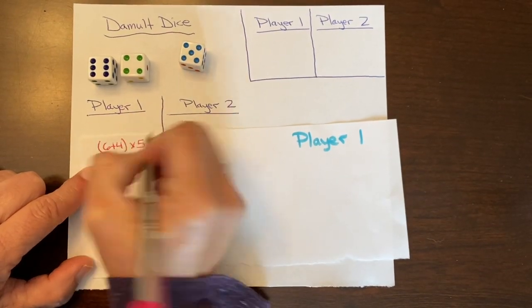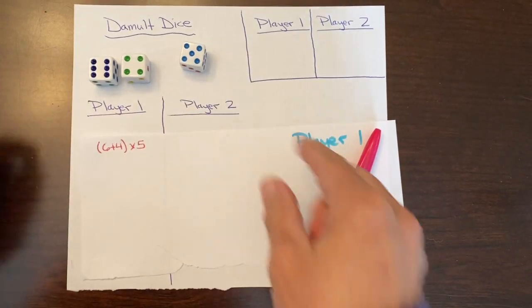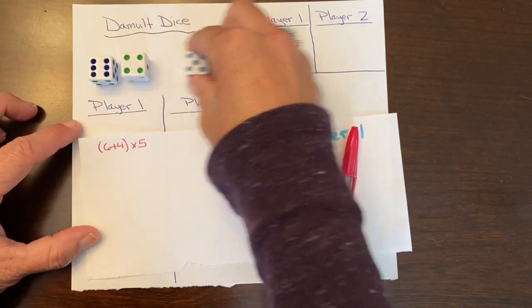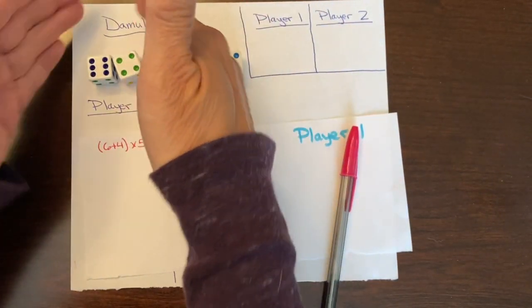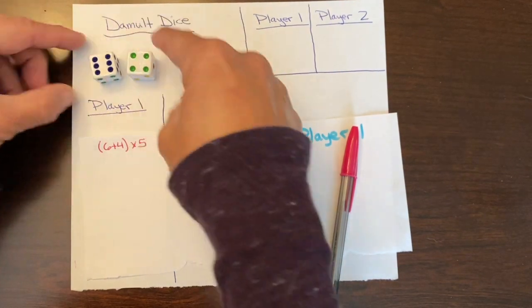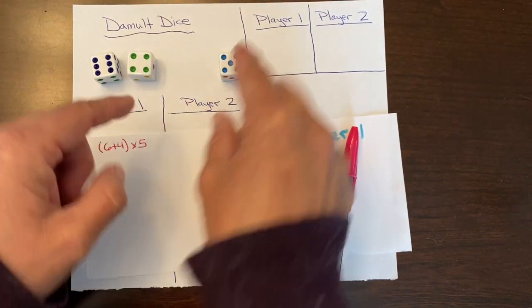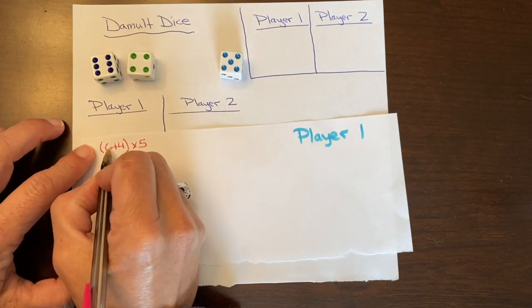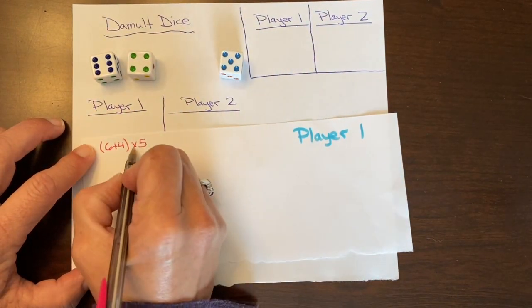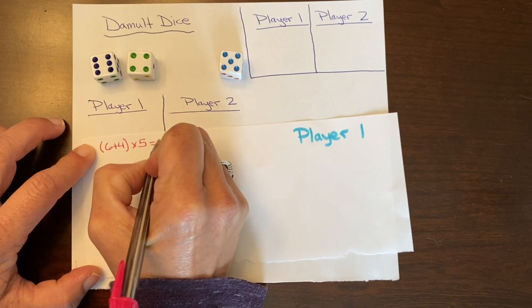These dice serve as a really good tool because we can move them around. And if I need to move it farther away so that visually I can see these together to add and then multiply, it allows me that opportunity. So 6 plus 4 is 10, and 10 times 5 is 50.